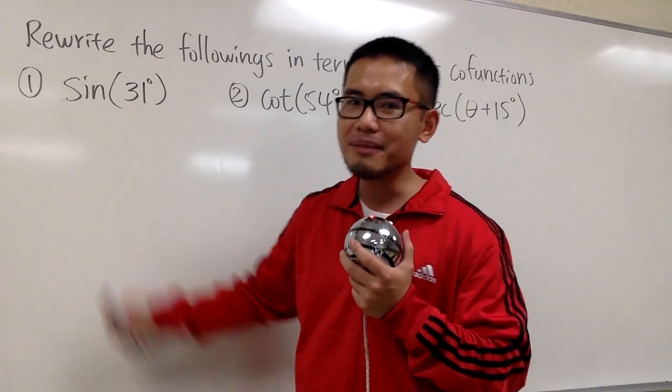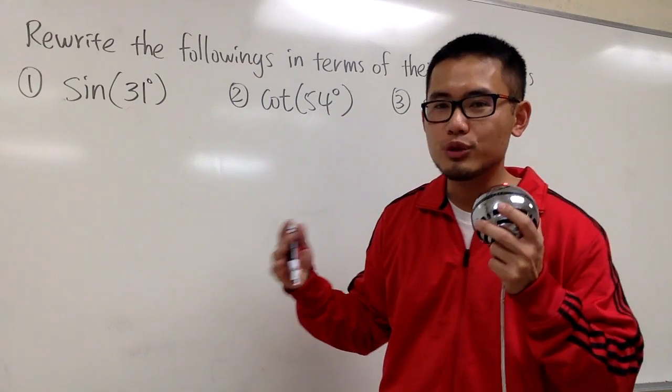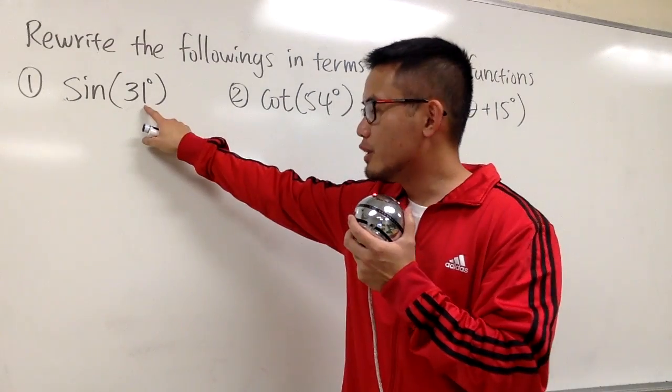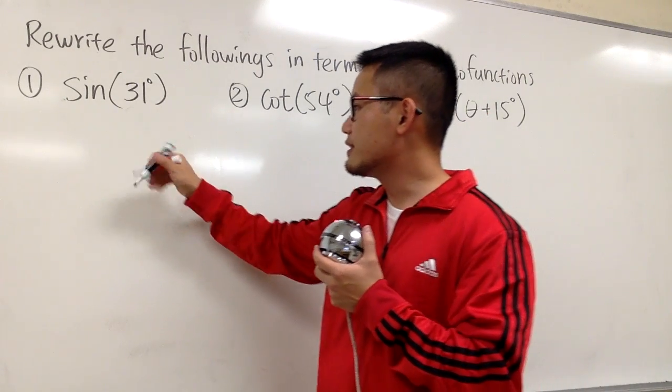When we have sine, we have cosine, but here we have 31 degrees already. Well, we just have to ask ourselves, 31 degrees plus what degrees will be 90 degrees? We can figure this out.